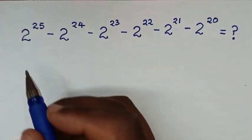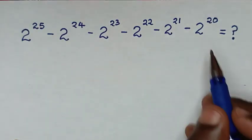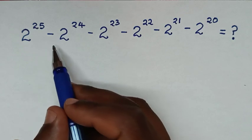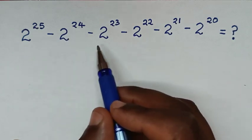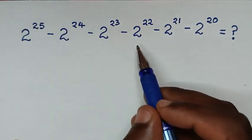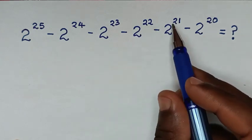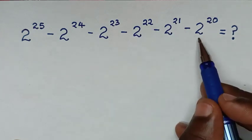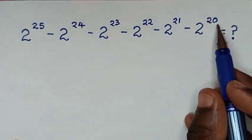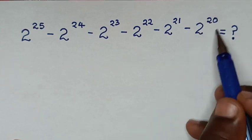Hello, welcome. We'll solve this math problem: 2 power 25 minus 2 power 24 minus 2 power 23 minus 2 power 22 minus 2 power 21 minus 2 power 20. We can see here 2 power 20 is the lowest exponent.